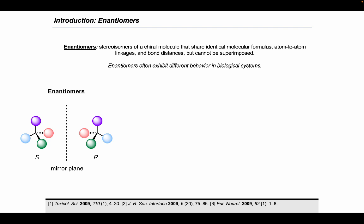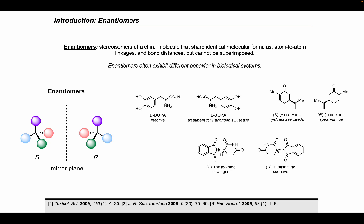Enantiomers are stereoisomers of a chiral molecule that share identical molecular formulas, atom-to-atom linkages, and bond distances but cannot be superimposed. In other words, enantiomers share the same structural elements and structural connectivity but they occupy opposite relative orientations in 3D space.